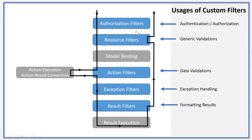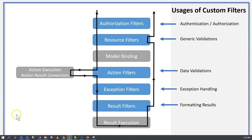The usages of the custom filters are authentication and authorization, generic validations, data validations, exception handling, and formatting results. You can create your own authorization filters, but I don't recommend doing that — the authorization filter that comes with ASP.NET Core is already very powerful. The resource filter here is mainly for generic validations. The action filter is mainly for data validations, but you can do a lot of different things in there. Exception filter is for exception handling and result filters is for formatting results. After implementing and applying these filters, you can extract any logic unrelated to the application logic, resulting in high cohesion controllers and a bunch of high cohesion filters.